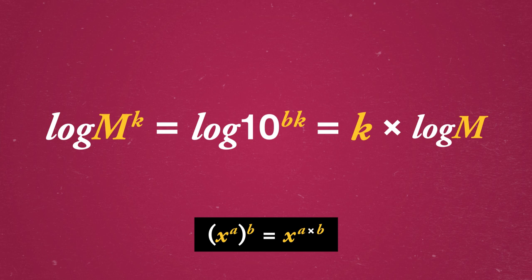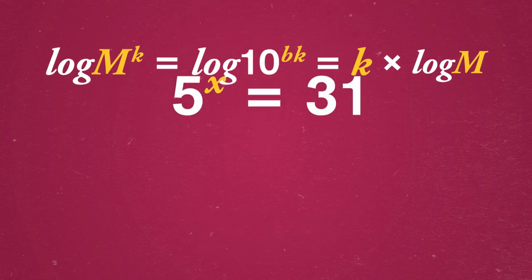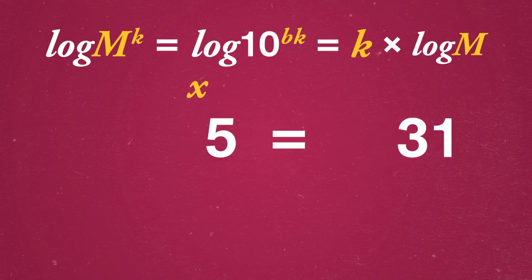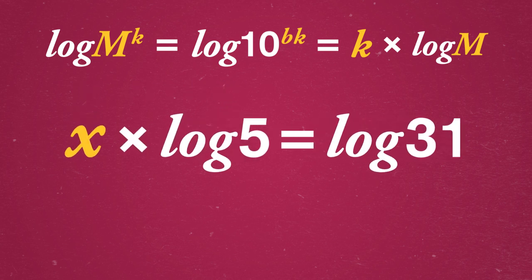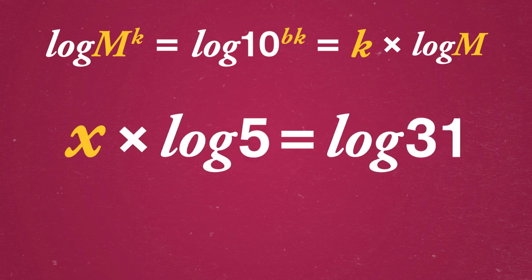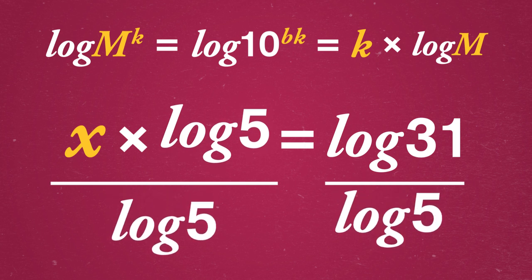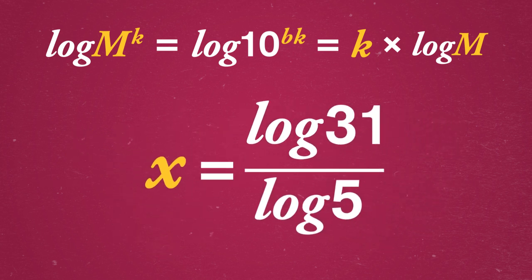We work with common logs here, but the same is true for any base. So, let's hit 5 to the x power equals 31 with a log on both sides to get x times log of 5 equals log of 31. Divide both sides by log of 5, and this leaves us with x equals log of 31 divided by log of 5.